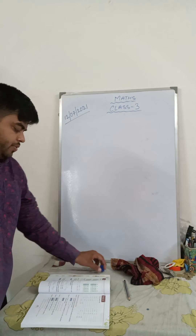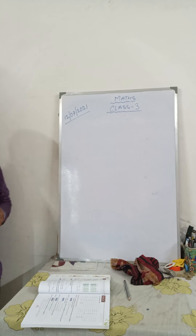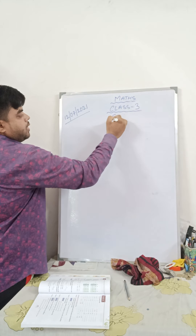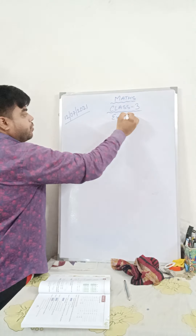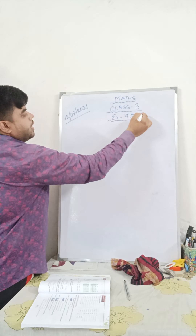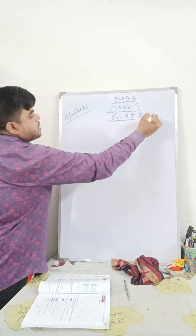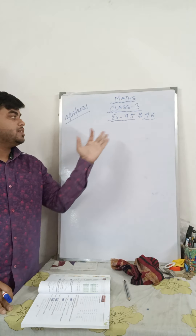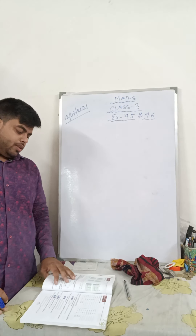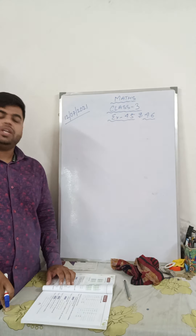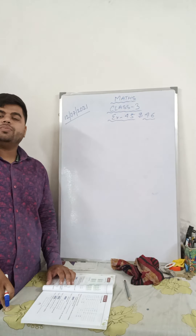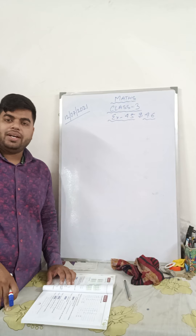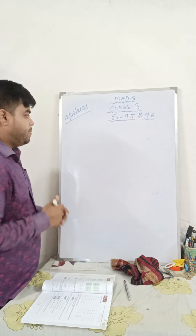Good morning students. This video is for Class 3 Maths and today we will start with Exercise 4.5 and 4.6. We will be doing 2 exercises because it will take very less time for exercise 4.6. In exercise 4.5, they have given you 3-digit multiplication with 2-digit multiplication — that means 3-digit multiplicand multiplied by 2-digit multiplier.